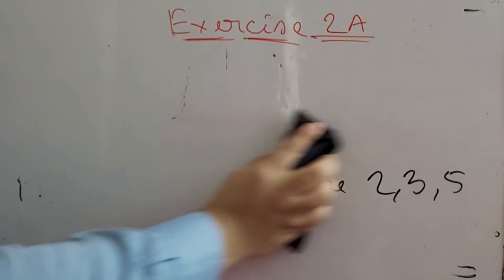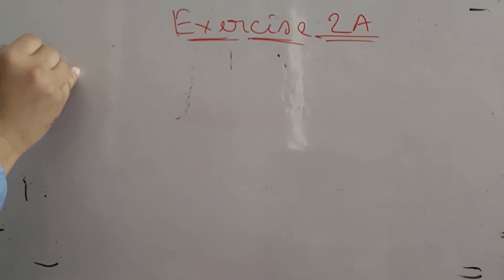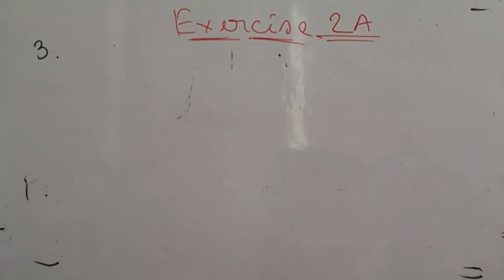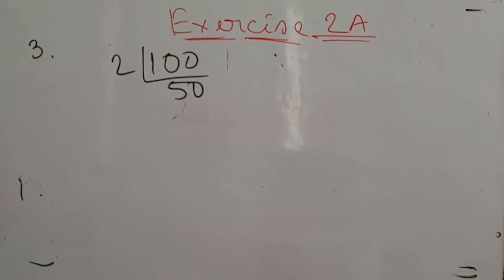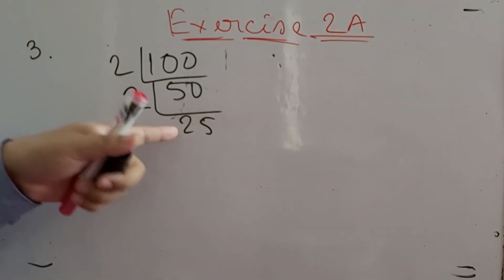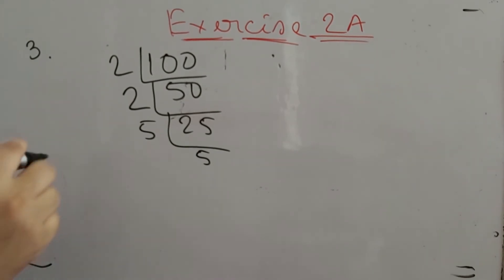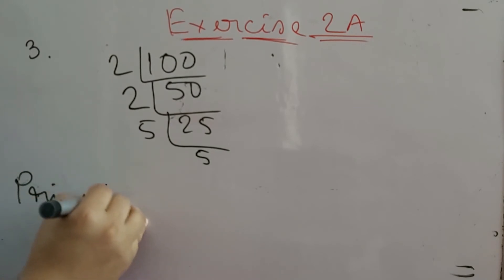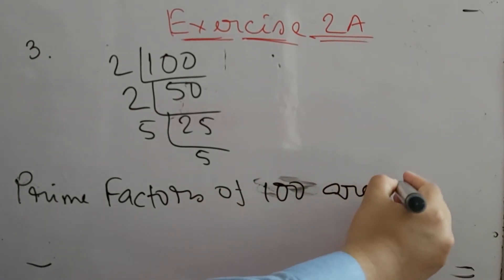Number 3: what prime numbers are factors of 100? We have to find the prime factors of 100. Since 100 is even, divide by 2: 100 ÷ 2 = 50. Divide 50 by 2: 50 ÷ 2 = 25. Now 25 is odd, so we move to the next prime: divide 25 by 5 to get 5, and 5 ÷ 5 = 1. So the prime factors of 100 are 2 and 5.